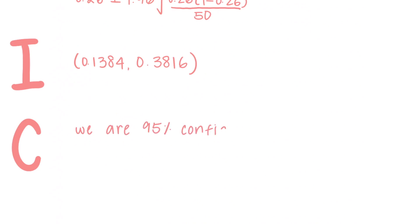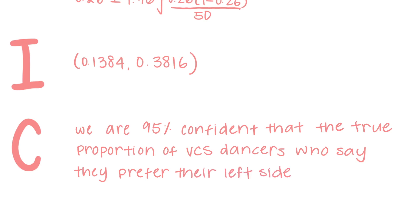From this, we can conclude that we are 95% confident that the true proportion of VCS dancers who prefer their left side over their right is between 13.84% to 38.16%.